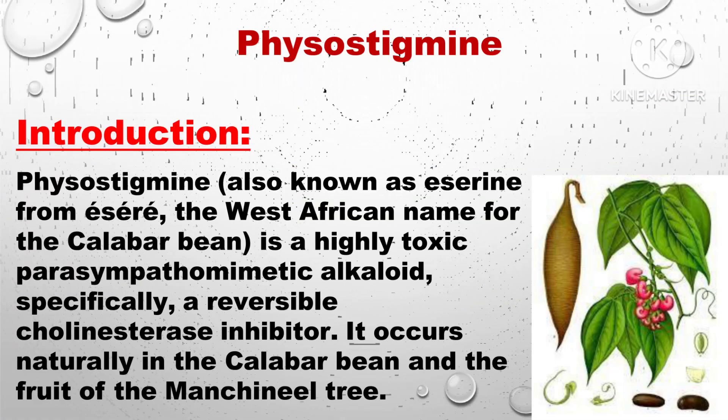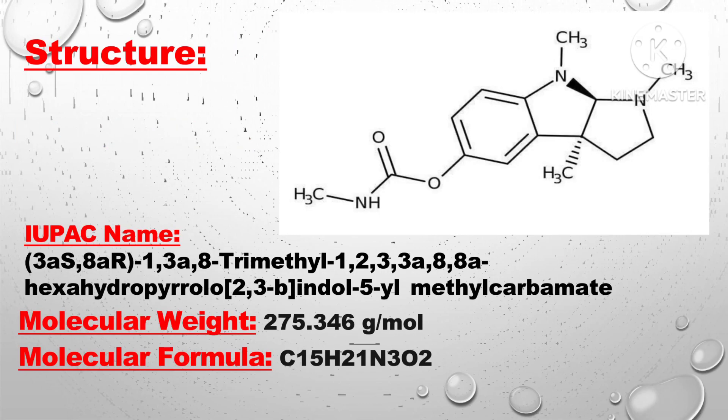Physostigmine is also known as Eserine. The Calabar bean is the best African name for it. It is a highly toxic parasympathomimetic alkaloid, specifically a reversible cholinesterase inhibitor. It occurs naturally in the Calabar bean and root of the Manchineel tree.